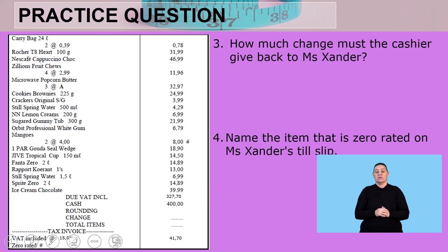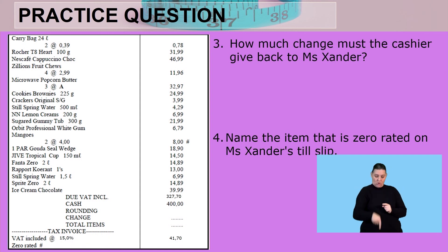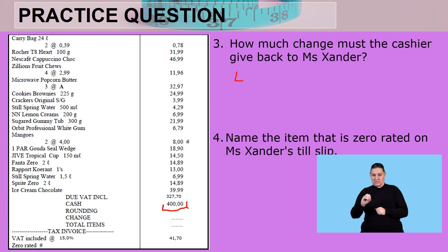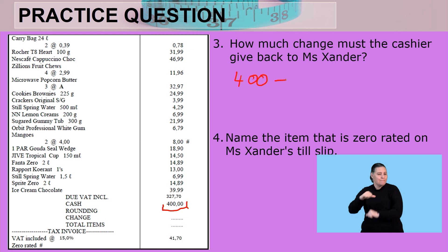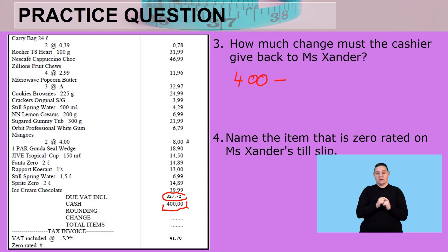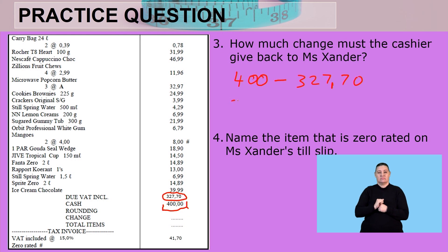How much change must the cashier give back to Ms. Sander? If we go all the way to the bottom, it's 400 rand that she has paid in cash. We've got to take away the amount just above it — that's 327 rand 70 cents — and I get 72 rand 30 cents.